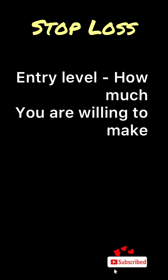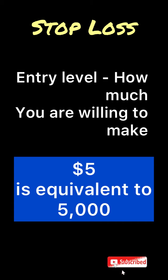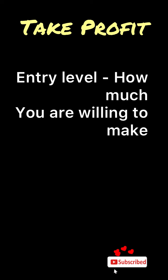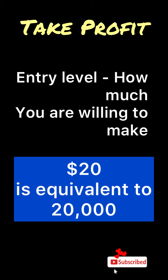The simple formula: your entry level plus how much you're willing to lose — that's for your stop loss. So for instance, if you're willing to lose $5, you do your entry level plus 5,000 equals whatever it gives you — that's your stop loss level. Copy it and paste it as your stop loss on MT5. If you're willing to lose $80, your entry level plus 80,000 equals your stop loss. The formula for take profit is your entry level minus how much you're willing to make. So if you're willing to make $20, you do your entry level minus 20,000, and that gives you the level equivalent to $20 worth of take profit.